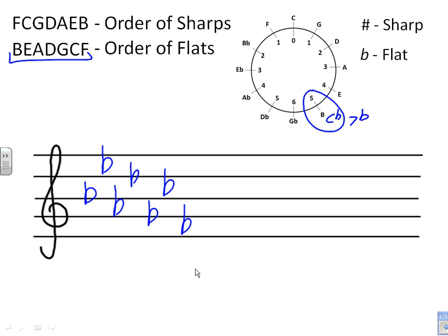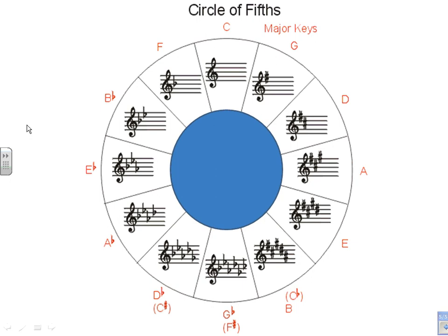So, I hope this has been helpful for you to be able to recognize and create your own circle of fifths. Remember that your favorite words are Father Christmas, Gave Dad an Electric Blanket, and Blanket Exploded, and Dad Got Crispy Feet. Will help you not only create your circle of fifths, but also create where you put your sharps and flats. So, that you end up looking, having something that looks like this. This is the ultimate goal for memorization of the circle of fifths.